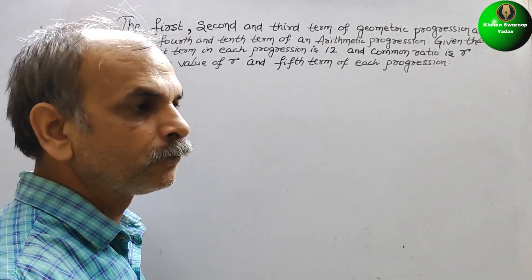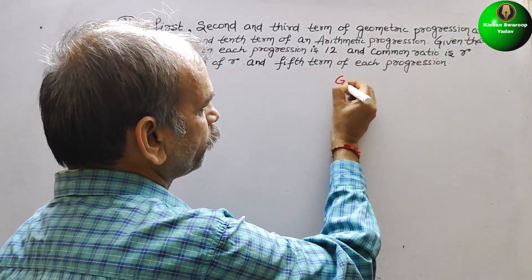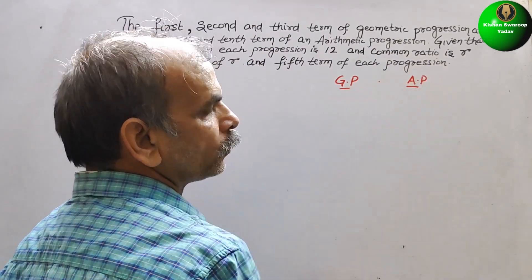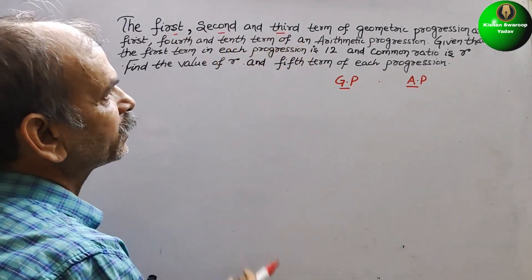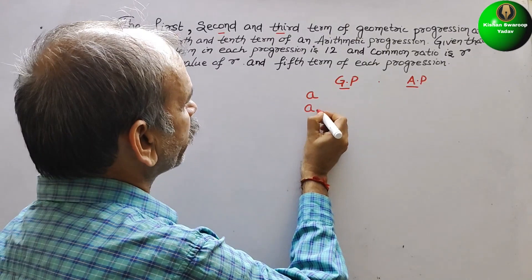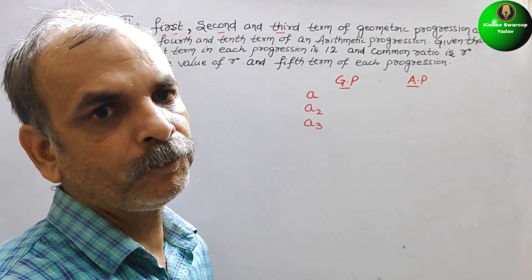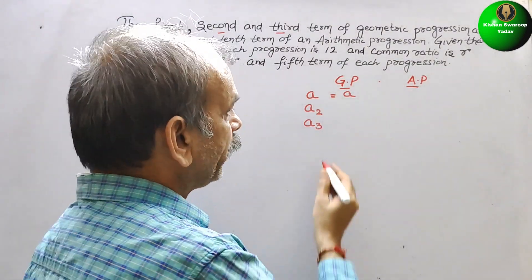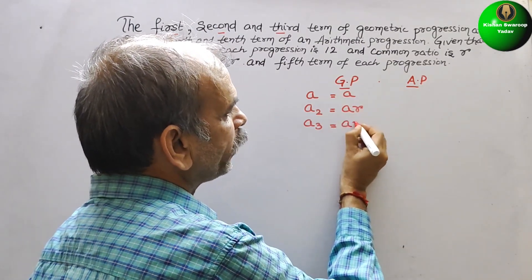We have been given two progressions: one is GP and another is AP. The first, second and third terms of the geometric progression are A1, A2, and A3. In GP, the first term A1 is equal to A, A2 is equal to AR, and A3 is equal to AR squared.